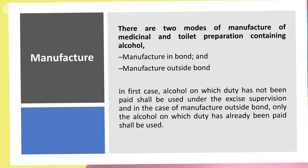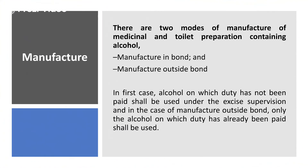It is very important to understand that in in-bond manufacturing, alcohol on which duty has not been paid shall be used under excise supervision. In the case of outside-bond manufacturing, only alcohol on which duty has already been paid shall be used. So in in-bond manufacturing, excise duty is paid after manufacturing, whereas in outside-bond manufacturing, excise duty must be paid before manufacturing the product.